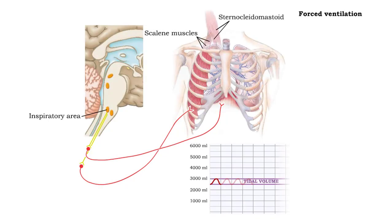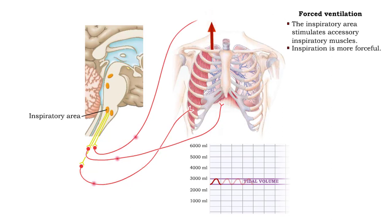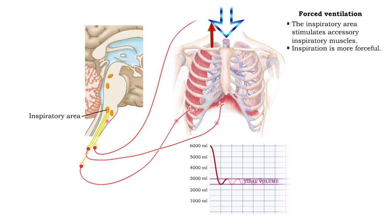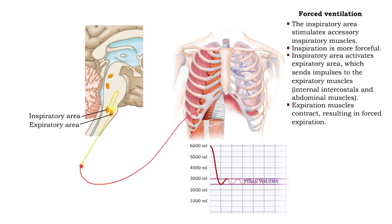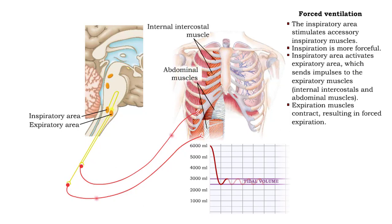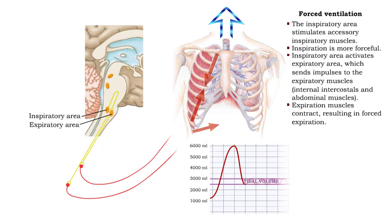In forced breathing, the inspiratory area sends impulses to accessory inspiratory muscles, resulting in a more forceful inspiration. The inspiratory area also activates the expiratory area during the expiration portion of the cycle. The expiratory area then sends impulses to expiration muscles, which consist of internal intercostals and abdominal muscles. These impulses cause the expiration muscles to contract, resulting in a forceful expiration.